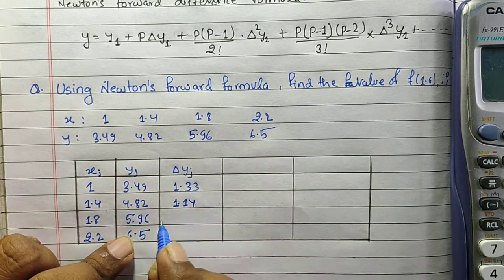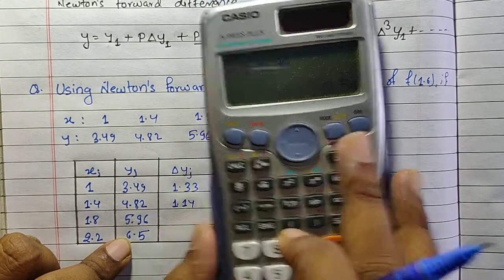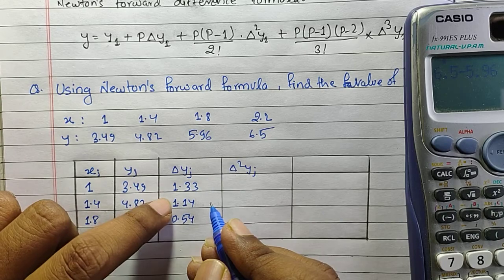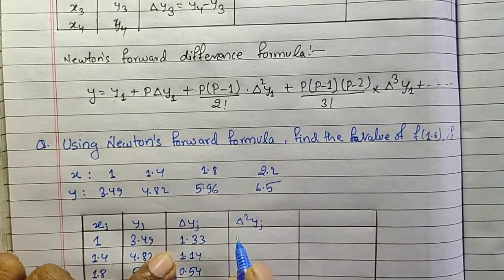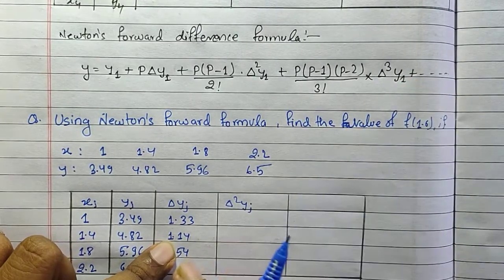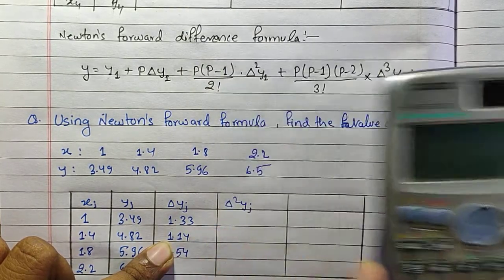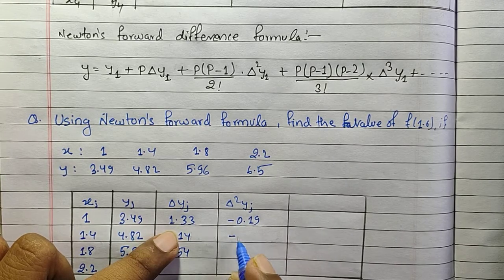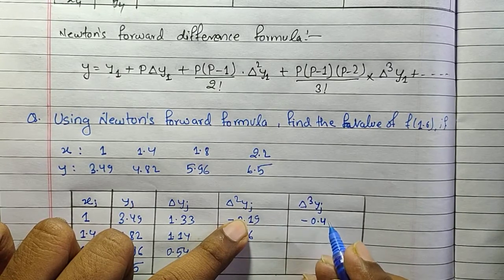For delta y3, that is 6.5 minus 5.96, which gives 0.54. Now moving to delta squared y_j: delta squared y1 equals delta y2 minus delta y1, so 1.14 minus 1.33 gives minus 0.19. Similarly, delta squared y2 gives minus 0.6. And for delta cubed y_j, after subtracting we get minus 0.41.